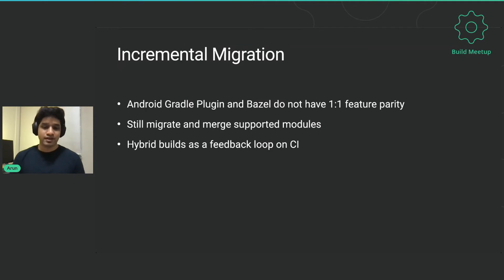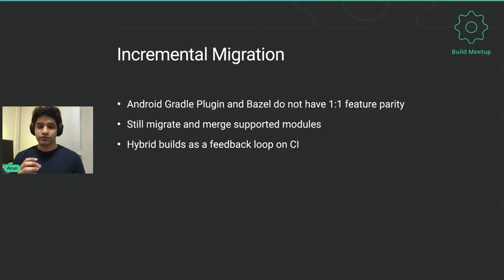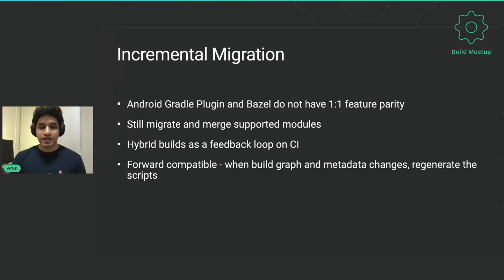We implemented a feature called hybrid builds. Hybrid builds provide a feedback loop on CI where part of the build graph is built with Bazel and the rest with Gradle. The advantage is we catch build regressions much earlier in the process — we don't need to wait for the entire migration to complete before verifying whether the build logic works and files are compiling correctly. The architecture is forward compatible and allows us to simply regenerate files when the build graph changes.